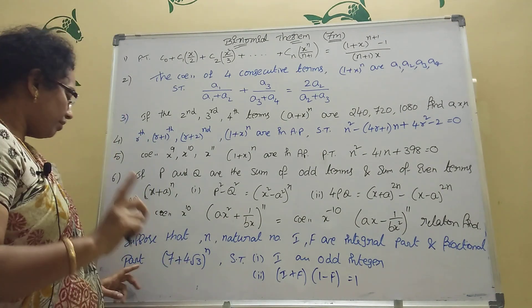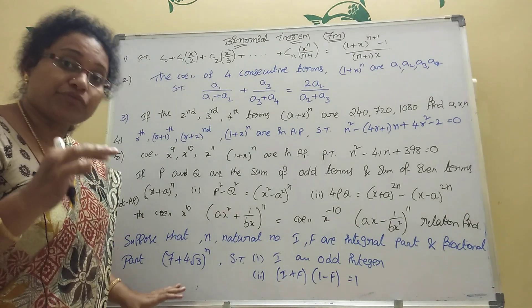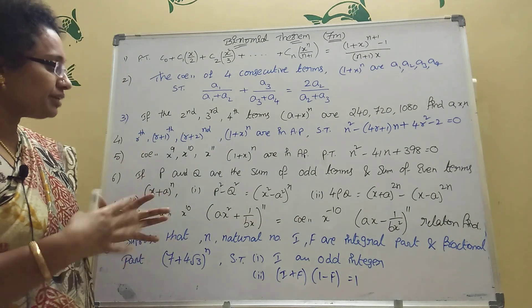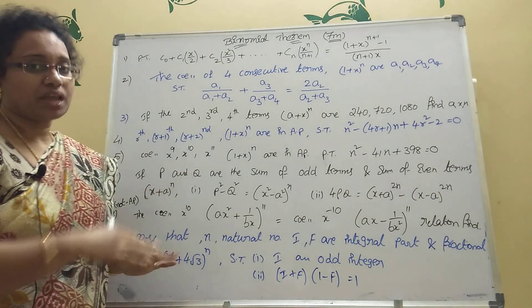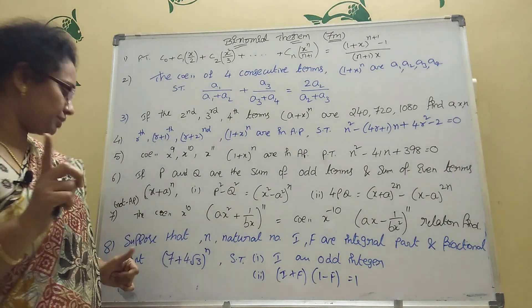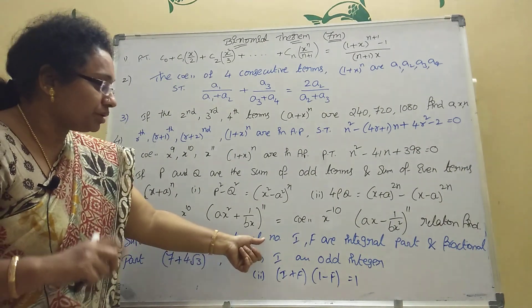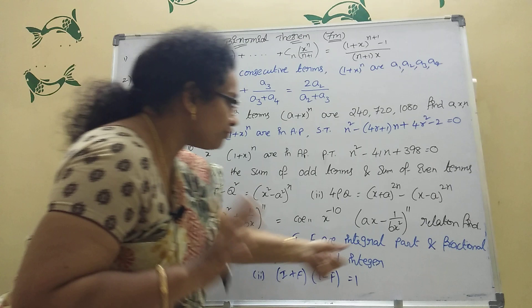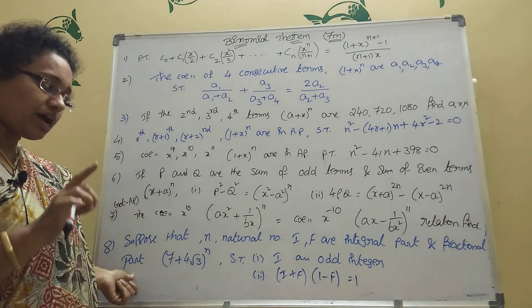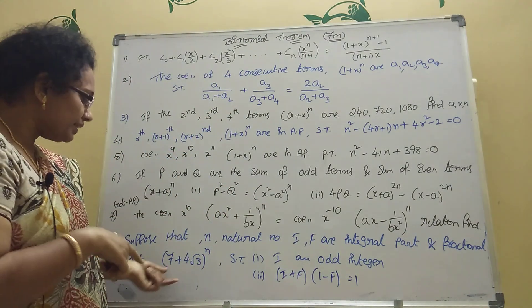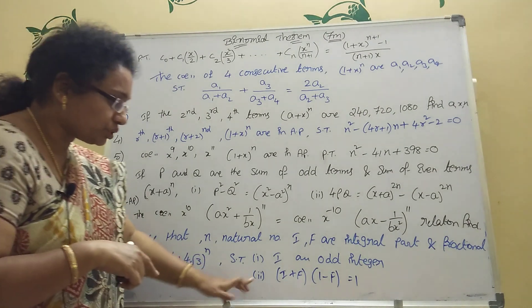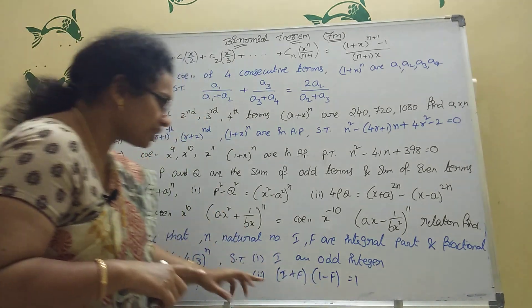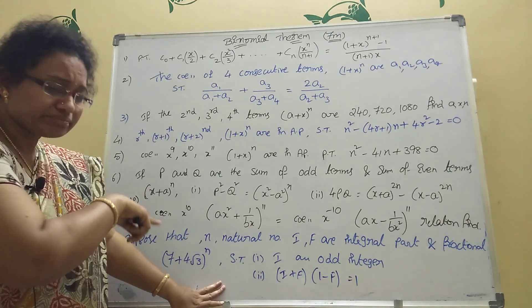From my 15 years of experience, I can tell you: for Telangana students, practicing these eight sums guarantees one question will come. Now, suppose n is a natural number and i and f are the integral and fractional parts respectively of (4+√3)ⁿ. Then show that i is an odd integer.